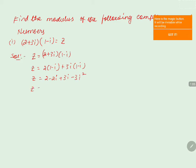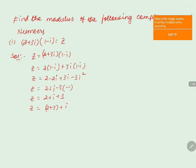Now simplifying: the imaginary terms are 3i and minus 2i, so 3i minus 2i becomes i. Then minus 3 into i squared — since i squared is minus 1 — minus 3 into minus 1 makes it plus 3. So the two real terms are 2 and 3. Adding them: 2 plus 3 becomes 5, giving us the real part, and the imaginary part is i.